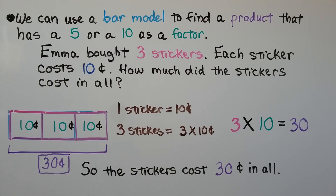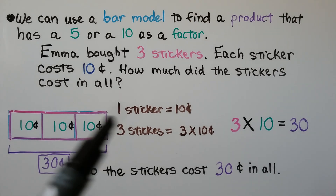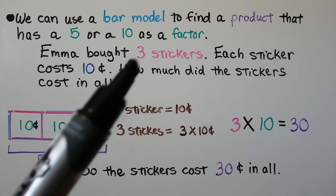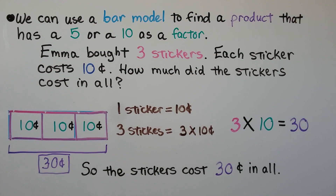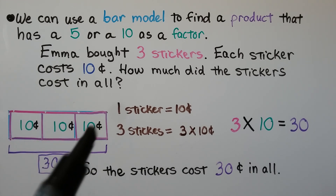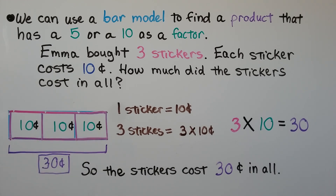We can use a bar model to find a product that has a 5 or a 10 as a factor, or any factor really. Emma bought 3 stickers and each sticker costs 10 cents. How much did the stickers cost in all? One sticker costs 10 cents, we have 3 stickers, so we have 3 groups of 10. 3 times 10 is equal to 30. The bar model shows 10, 20, 30. The stickers cost 30 cents in all.